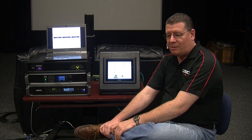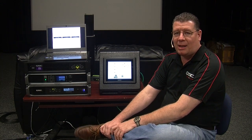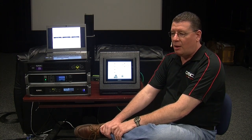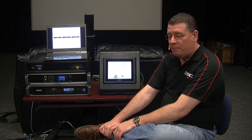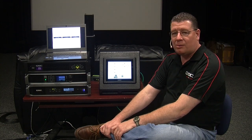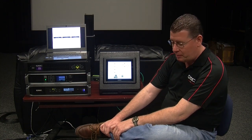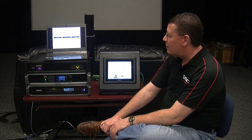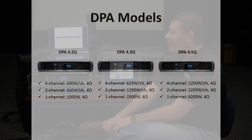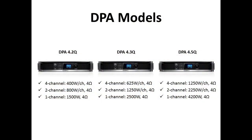We'd like to take a few minutes to talk about the DPA amplifiers, which are our brand new line, and compare those to our DCA range of amplifiers. There are three models or three power ratings within the line. We have a networked version which has the Q suffix — so that would be the DPA 4.2Q versus the DPA 4.2, which is the analog input version.